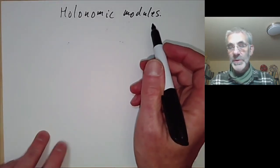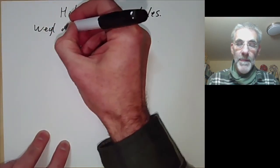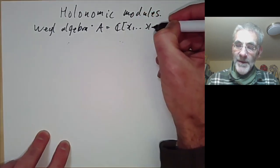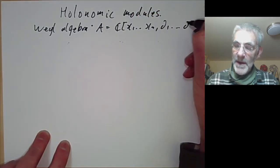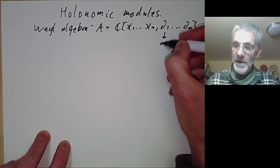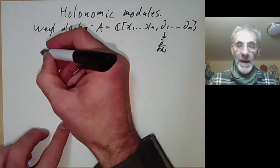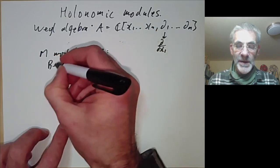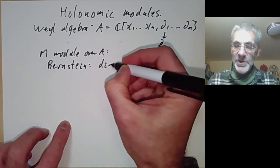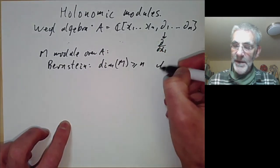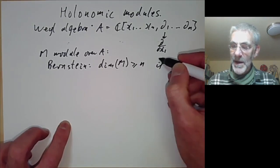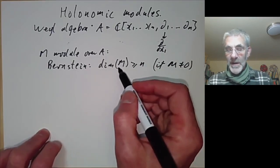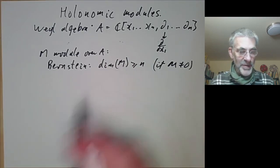Let's recall what a holonomic module is. We have the Weyl algebra A, which is non-commutative polynomials in variables x1 to xn and their partial derivatives — shorthand for differentiation with respect to x1 and so on. If M is a module over the Weyl algebra, Bernstein's inequality showed that the dimension of M is at least n if M is not equal to zero. Here the dimension of M doesn't mean its dimension as a vector space, but its dimension defined as the degree of a Hilbert polynomial associated to it.